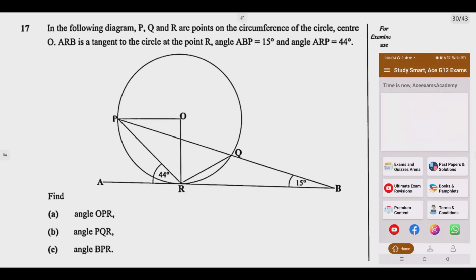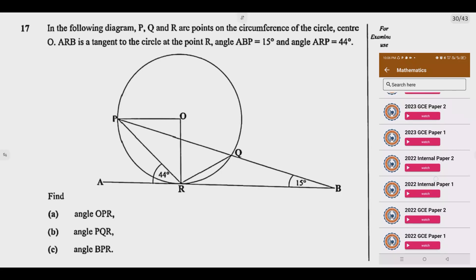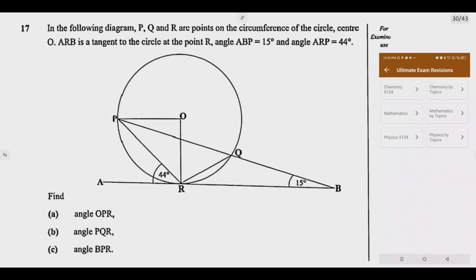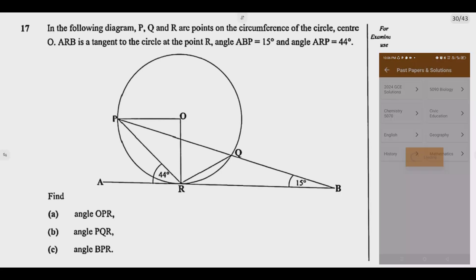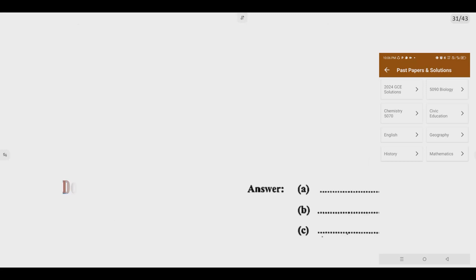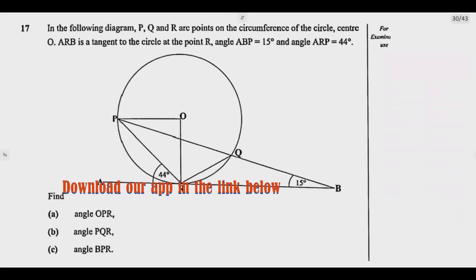Find question A: angle OPR. B: angle PQR. C: angle BPR. So those are the questions and the total number of marks are 4 marks. So how do we answer this question?